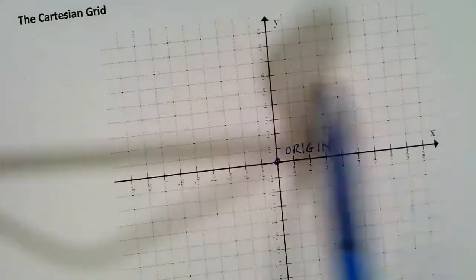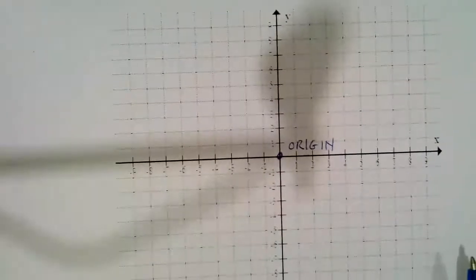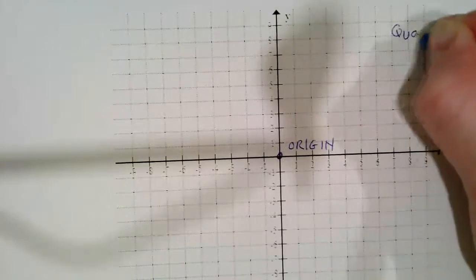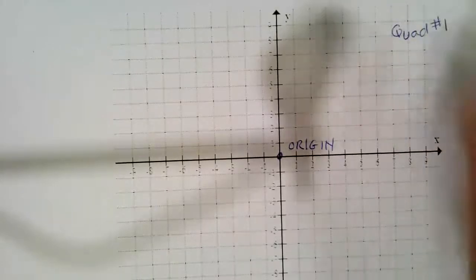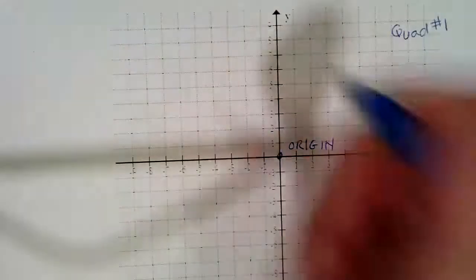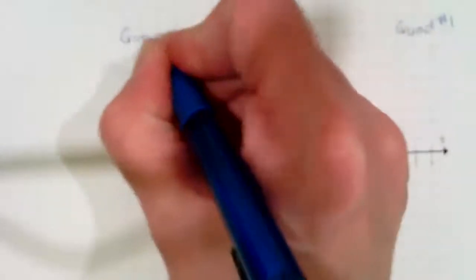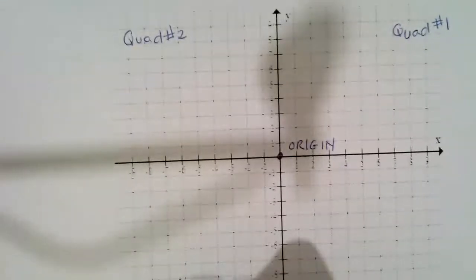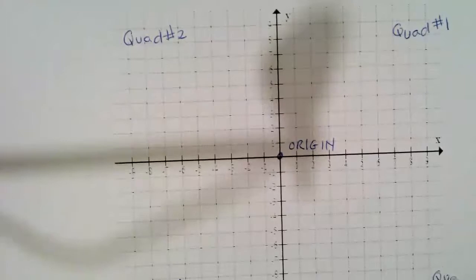Now you can see that there are four different sections to our Cartesian grid, and they are called quadrants. So this one up here is called quadrant number one. And you actually go in a counterclockwise orientation. And this is number two. This is quadrant number three. And this one is quadrant number four.